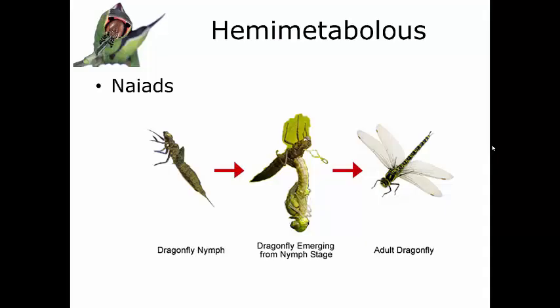Hemimetabolous, or hemimetabolist, is another kind of gradual metamorphosis where you see a slight difference between the nymphal stages and the adult stage. 'Hemi' literally means half. In hemimetabolous development, the young look a lot like the adults with one or two major differences — in particular, the young do not have wings while the adults do. The key distinction from parometabolous is that the young in hemimetabolous development do not live in the same environment as the adults. The young, in this case, are called naiads because they live in an aquatic environment — underwater, with gills.